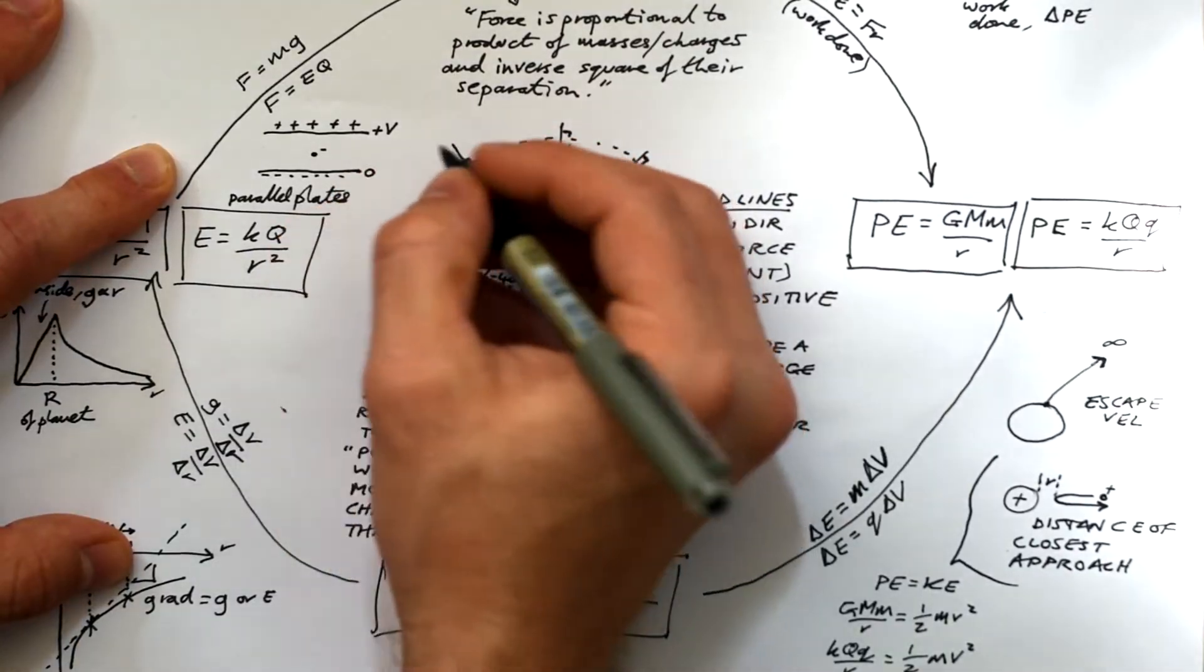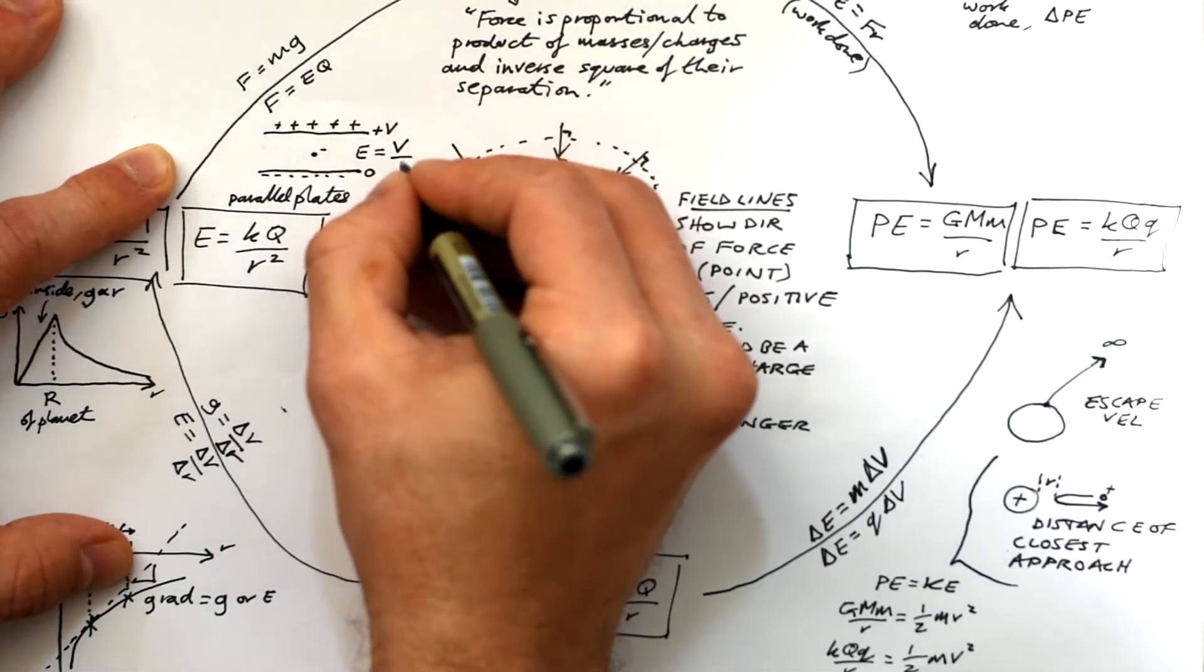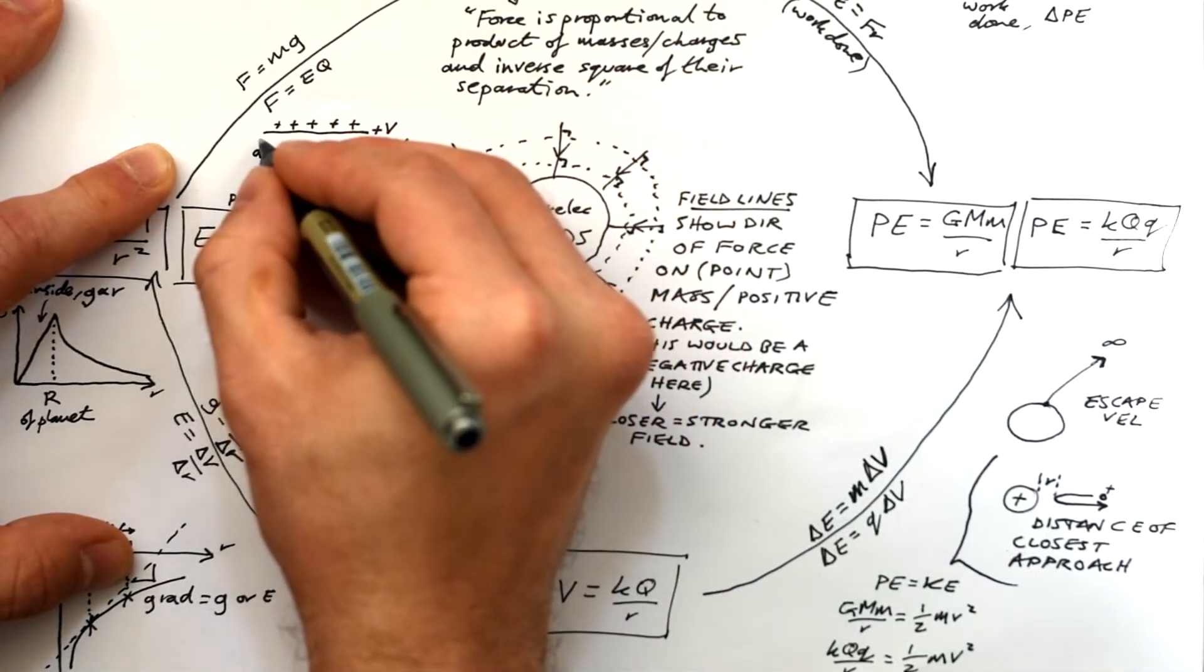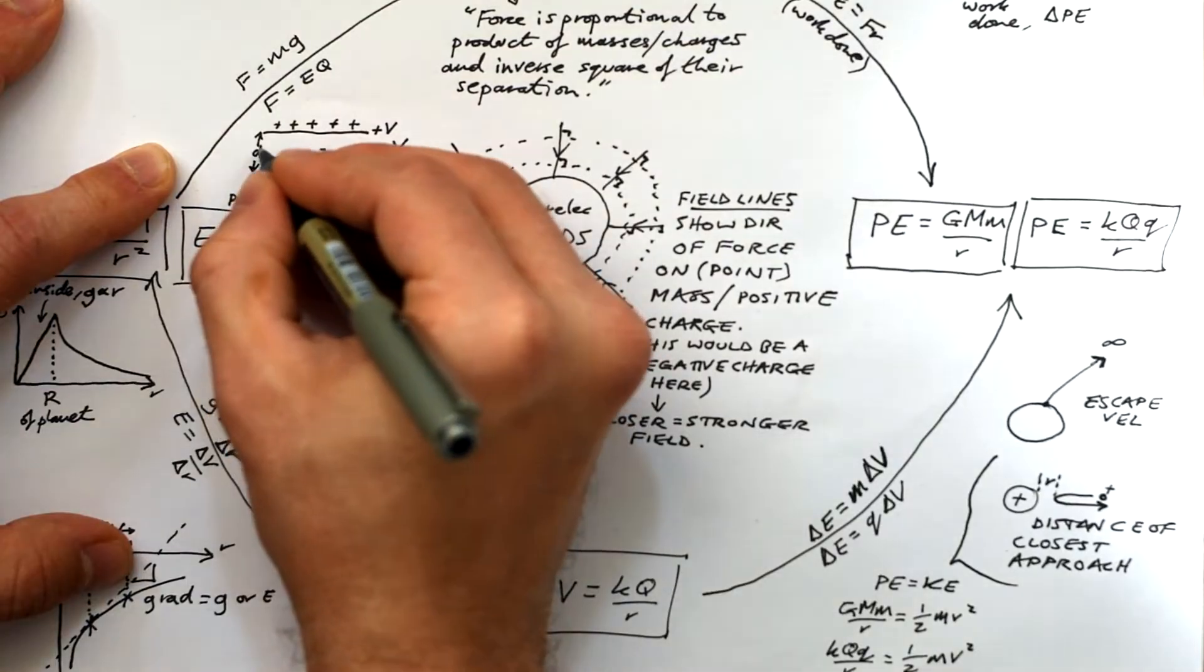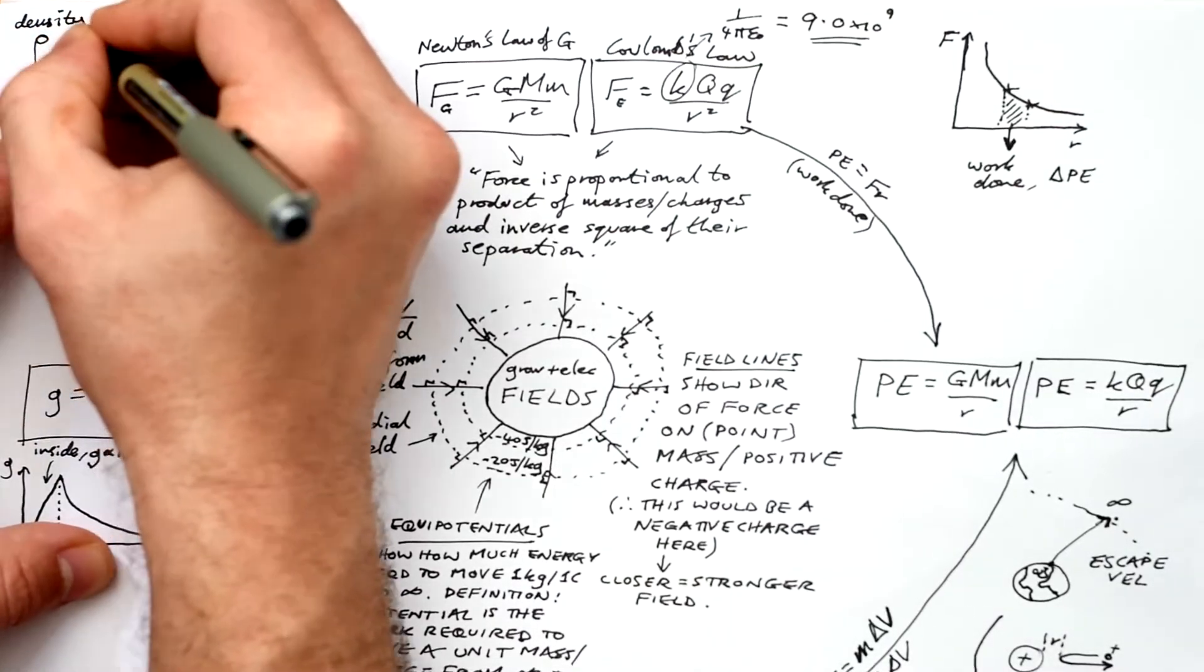If you have two parallel plates that are charged, then we have a uniform field and electric field strength is equal to just the potential difference between the two plates divided by the separation of the plates. And if you want to know the force on the charge, just do F equals Eq.